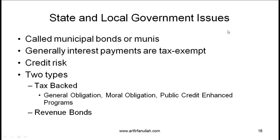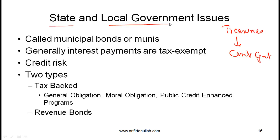We have spoken earlier about treasuries, which are government securities issued by the central government of a country. Now in many countries, especially the United States, the state governments and local governments also issue fixed income securities. These securities issued by the state government or the local government are often called municipal bonds or munis.